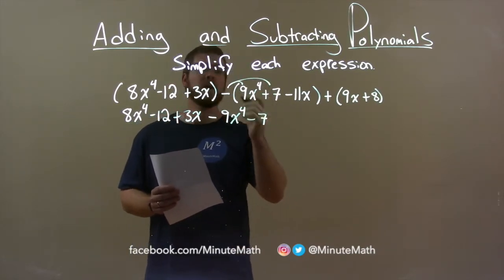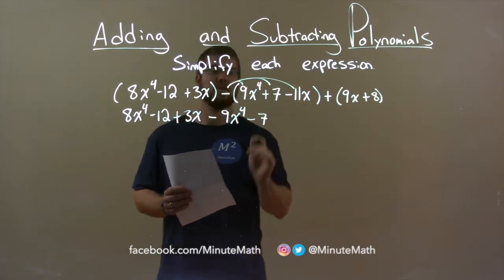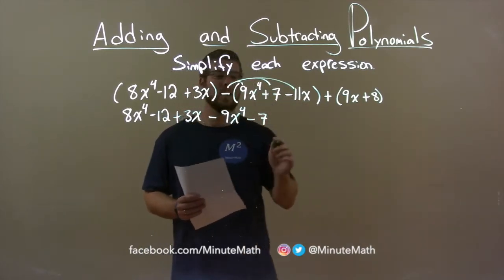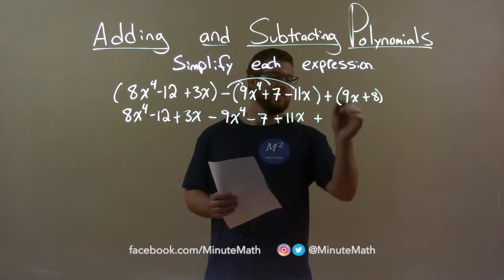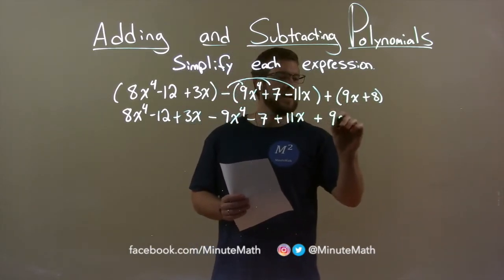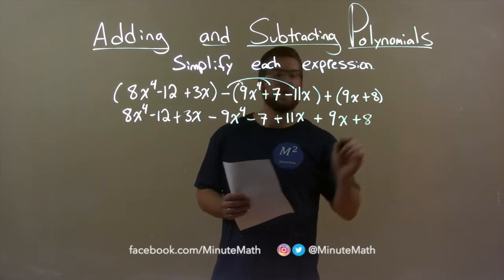Minus 7, and lastly, minus and a minus, or negative and negative become a positive, plus 11x. Plus sign here, we just bring down the last parenthesis, 9x plus 8, but we don't need the parenthesis there.